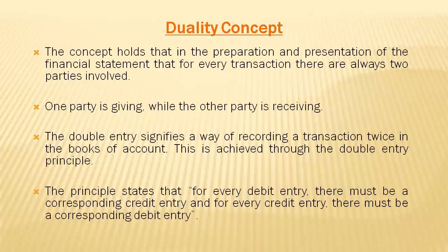The double entry principle signifies a way of recording a transaction twice in the book of accounts. For example, if I want to buy a motor vehicle, I go with cash or a check and give it to the motor vehicle dealer, who gives me the motor vehicle I've purchased. The principle is that for every debit entry, there must be a corresponding credit entry and vice versa. That's the principle of double entry — for every debit entry there must be a corresponding credit entry, and for every credit entry there must be a corresponding debit entry.